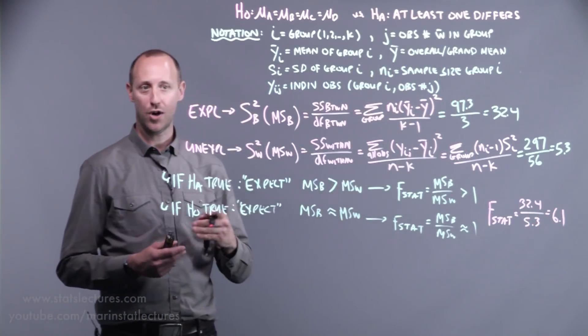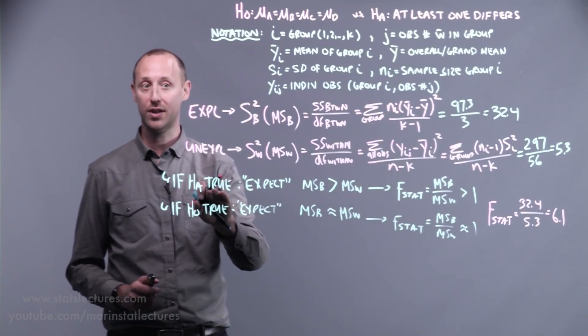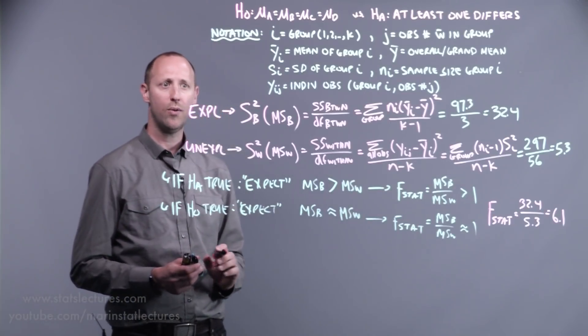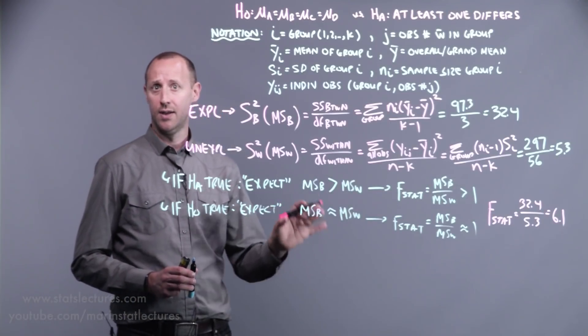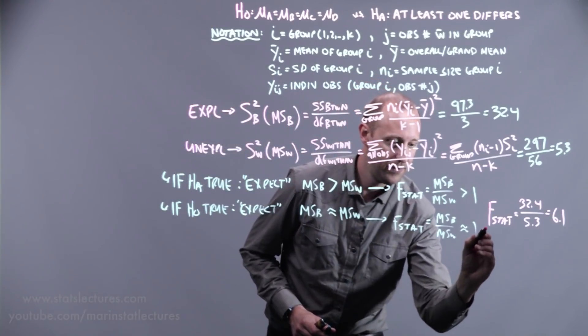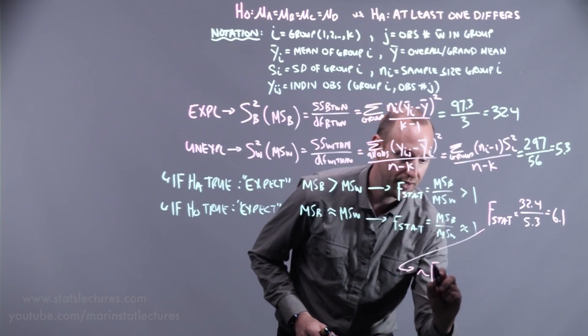So the larger our F statistic gets, the more evidence we have that the alternative is likely true or the null is false. While we don't want to get too caught up on looking things up in tables, it's important to note that this F statistic follows what's called an F distribution.